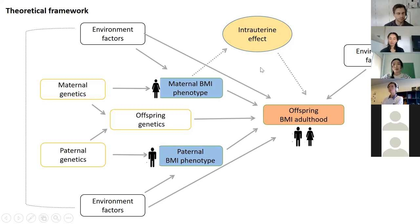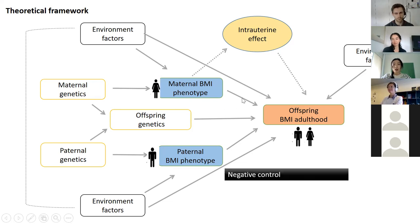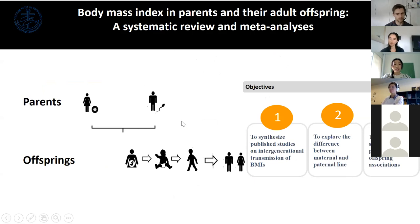Above those two major factors, it is also suggested that mothers with greater BMI before or during pregnancy might increase the risk of obesity in their children, according to the intrauterine effect. This has been supported by some animal studies, but it's hard to test in human observational studies due to confounding factors. There are ways to provide evidence, like Mendelian randomization, and also negative control studies which use the paternal effect as a control and compare the mother-offspring association with the father-offspring association.